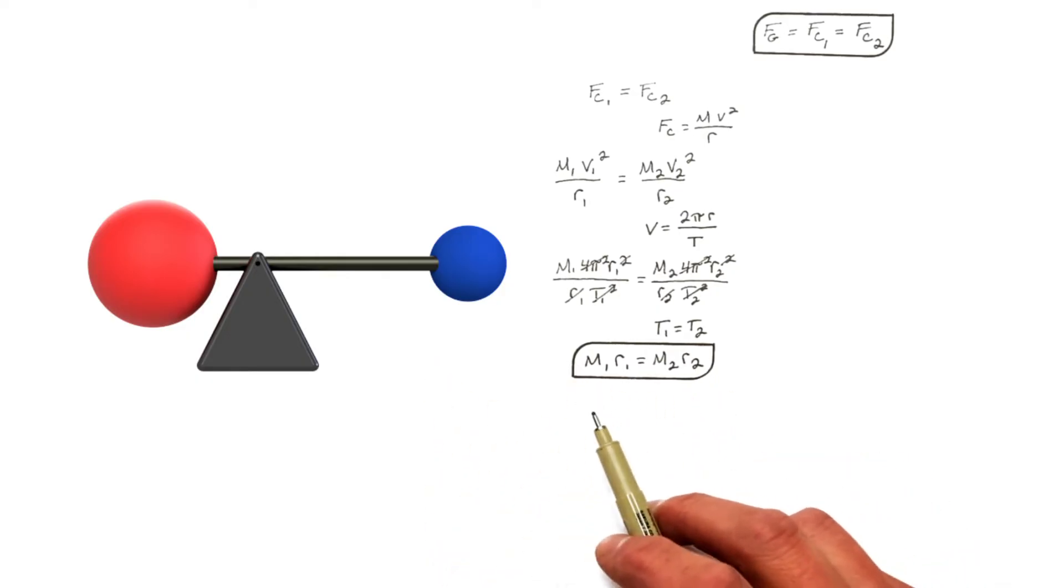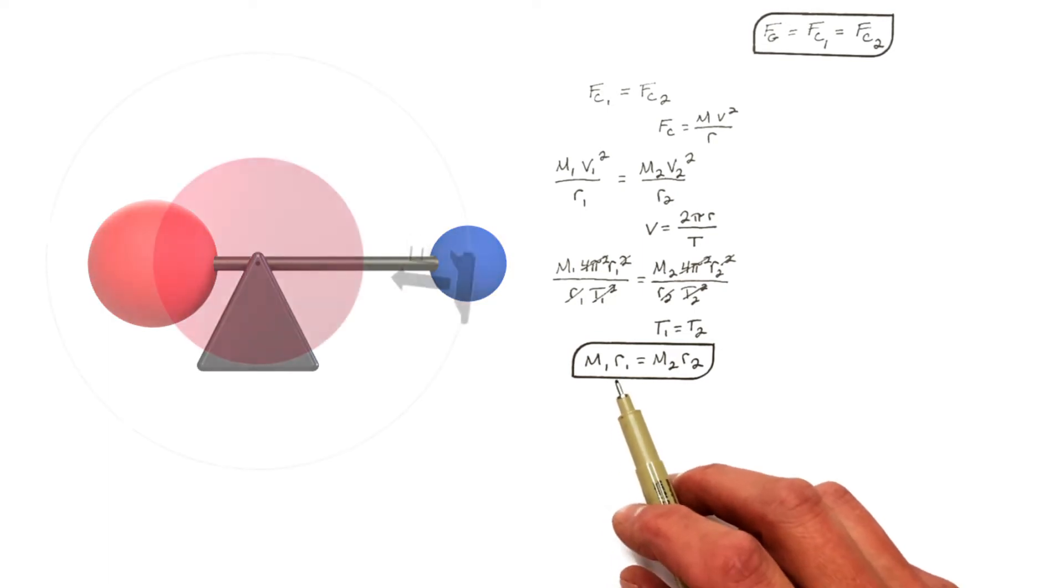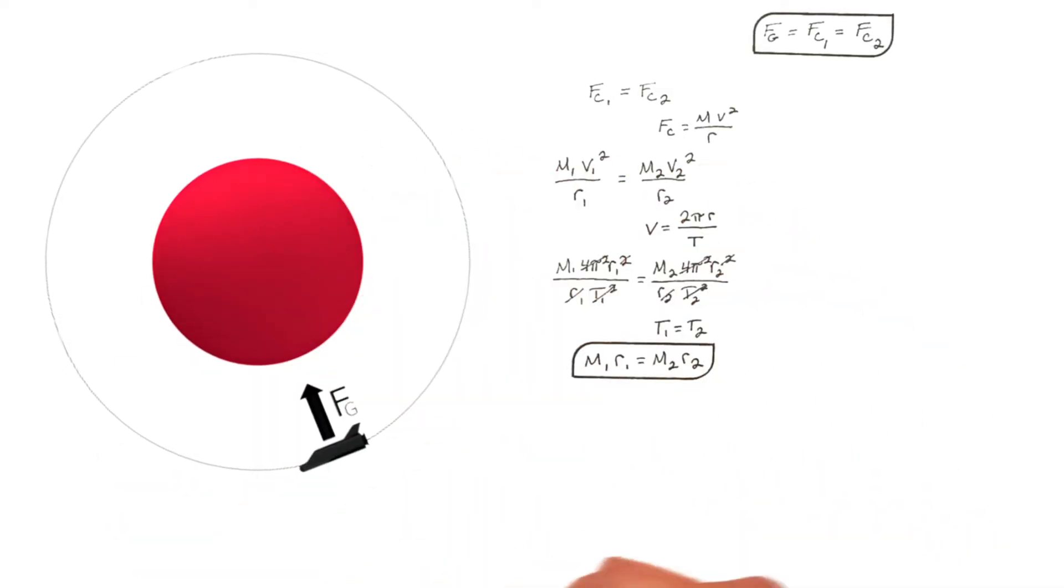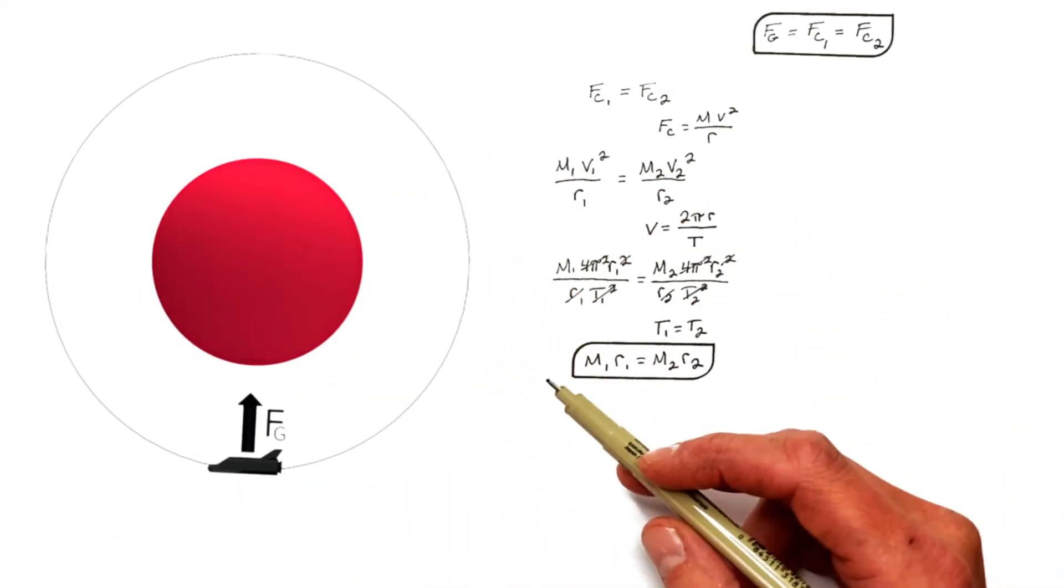Now, you'll notice in looking at this equation, if one mass is much, much larger than the other, the radius of the larger mass's orbit reduces down to the point where it essentially remains still. And the other mass orbits around it, like our spaceship orbiting the Earth.